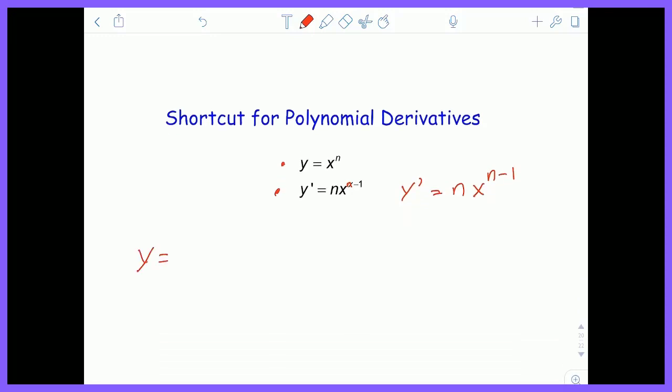So very simply, if you have the function x cubed minus 2x squared plus 3x minus 4, its derivative, term by term, you just follow this pattern here.